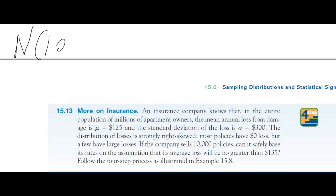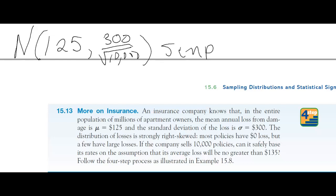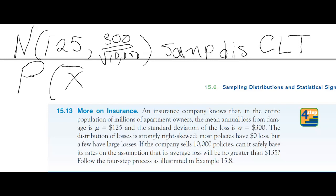The mean is going to be the same as the population mean, $125. Our standard deviation is going to be 300 divided by the square root of 10,000. By CLT, this is our sampling distribution. What we want to find is the probability that our x-bar — the average loss — will be no greater than $135. So let's go into Desmos to calculate this.